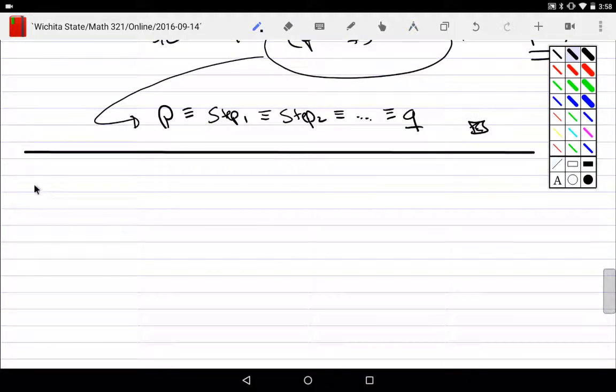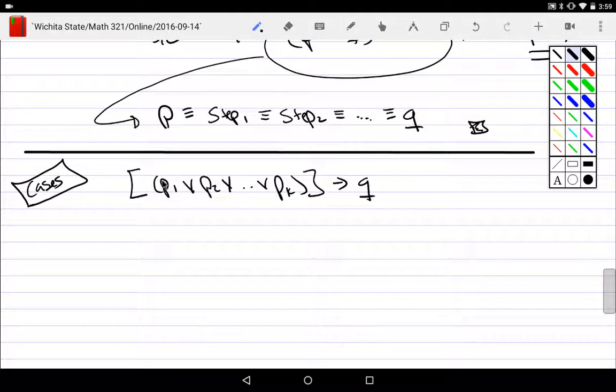Okay, another approach to that would be what if I would have a bunch of cases. What if I would have that I would have proposition one or proposition two or proposition K, and this all goes to a single conclusion. An example like this would be the number one. If you had the number one or the number two or the number three or all the way up to the number ten, then this thing holds for all of those numbers.